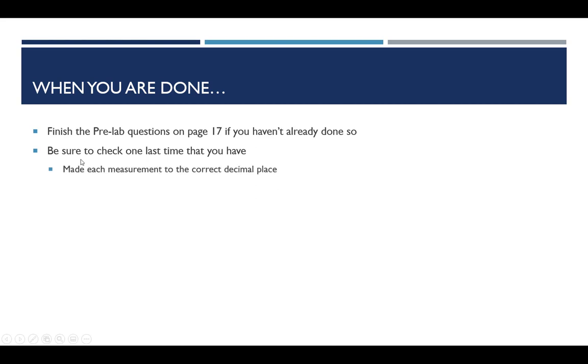So when you are done, if you haven't finished all the pre-lab questions on page 17, be sure that you do that. Make sure that you go over the entire experiment and that you check that every measurement is to the correct decimal place, following everything that we worked on in experiment 1. Make sure that you have units for every measurement, so if a unit wasn't already written down on the line for you to fill in, you need to make sure that there is a unit supplied.